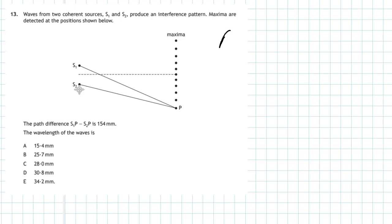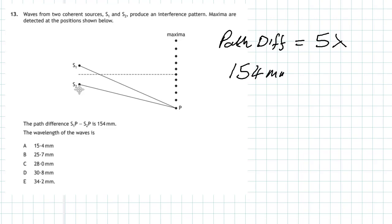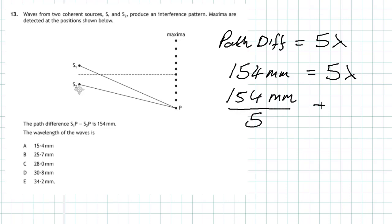At point P, the path difference equals five whole wavelengths for a fifth maximum. The physical path difference is 154 millimetres, so 154 mm = 5λ. Dividing by 5 gives a wavelength of 30.8 millimetres, which corresponds to answer D.